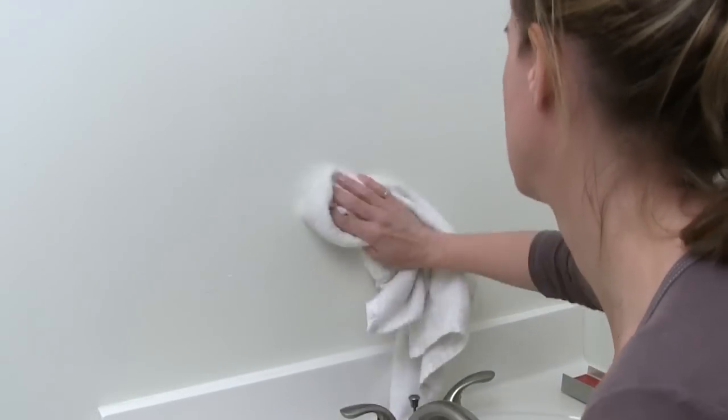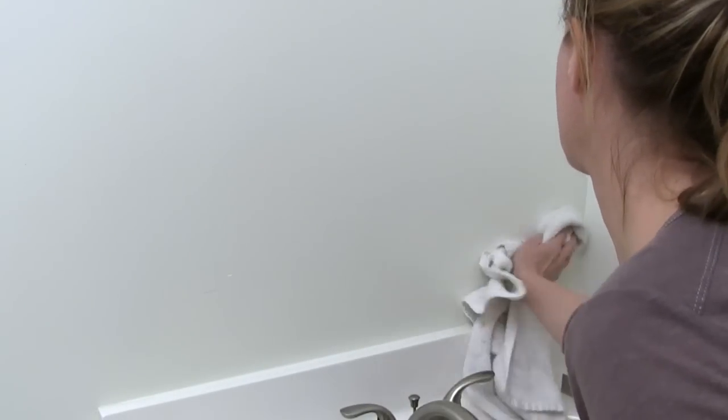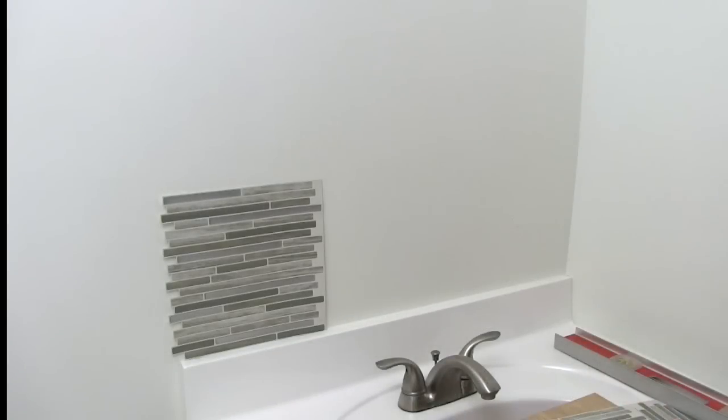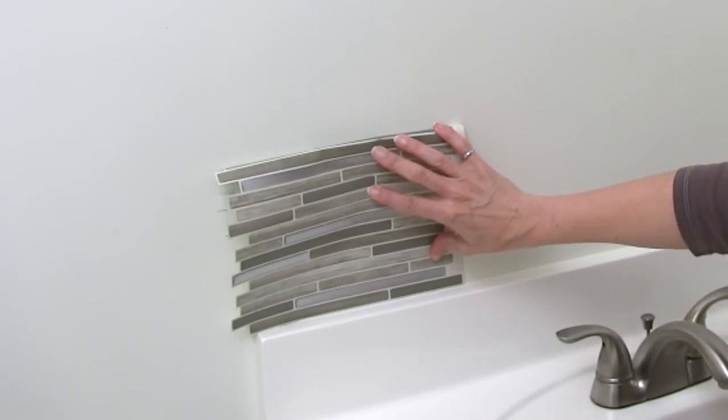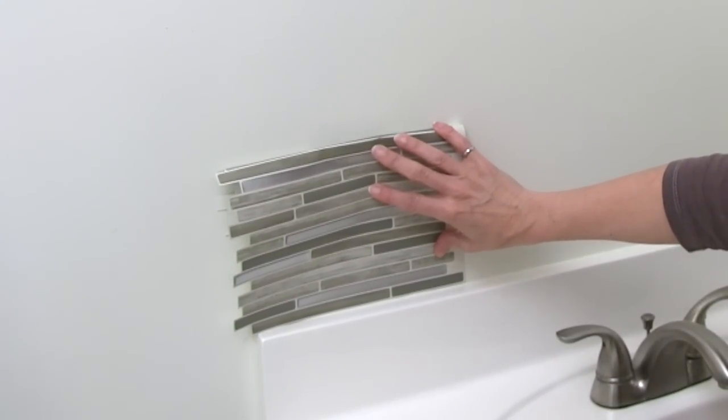First I prepped the surface by cleaning it with degreaser, like TSP. And I debated whether to make the backsplash the full height of the tile, which is about 10 inches, or to make it a bit shorter. And in the end I decided to go with a shorter backsplash of about 7 inches high.